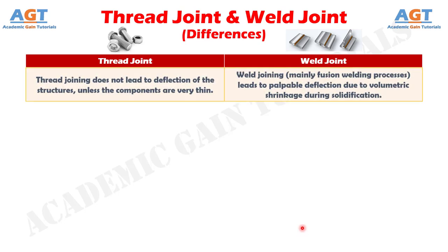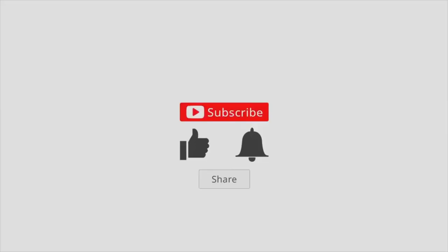Difference number 10: thread joining does not lead to deflection of the structures, unless the components are very thin. Whereas, weld joining — mainly fusion welding processes — leads to palpable deflection due to volumetric shrinkage during solidification.